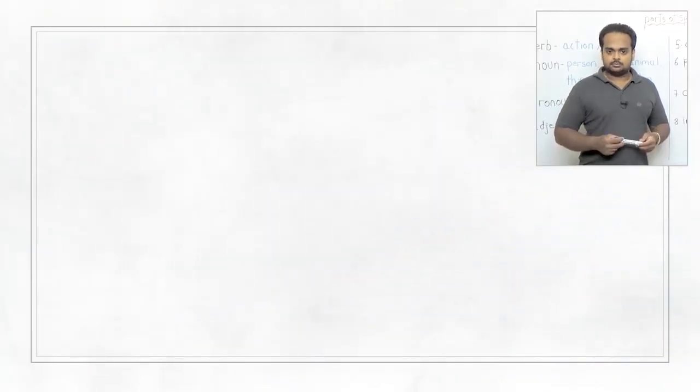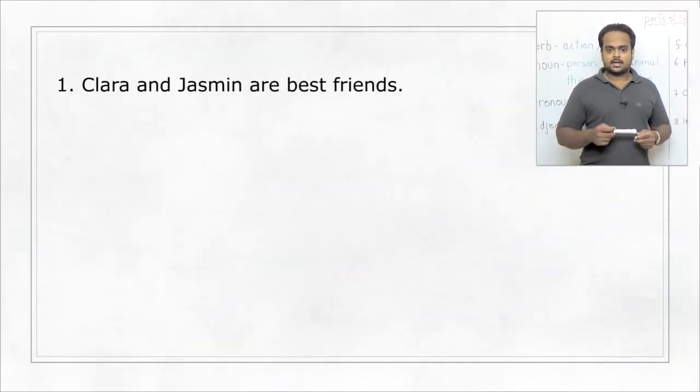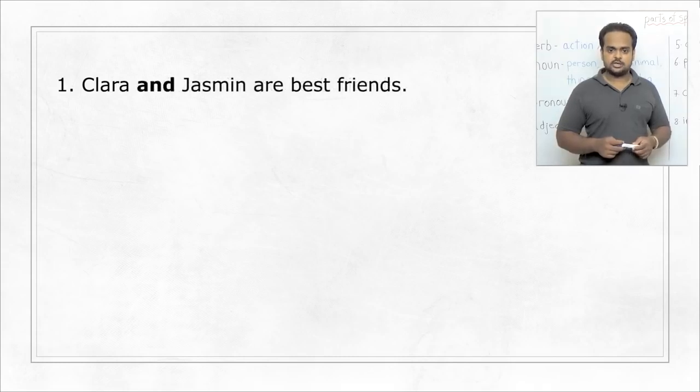For example, in the sentence Clara and Jasmine are best friends, can you say which the conjunction is? The conjunction is and, and it helps to connect Clara and Jasmine, both of which are nouns.